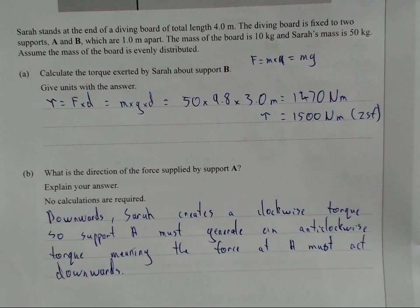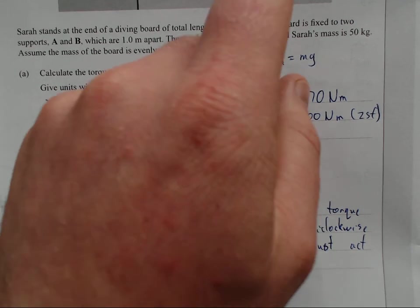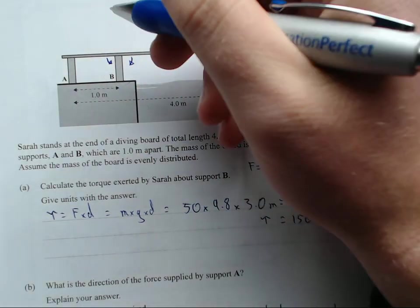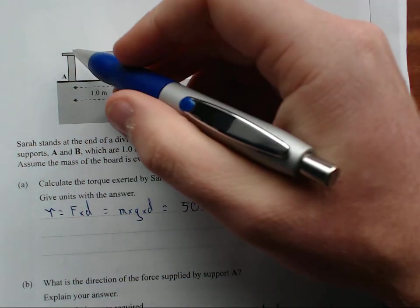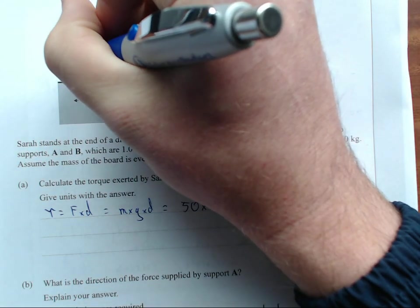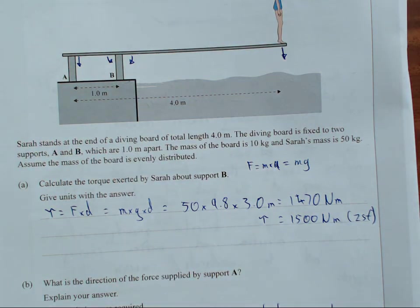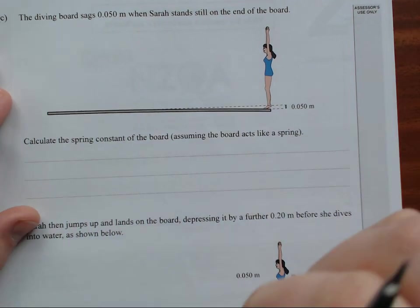Similar as that. So, because she creates an anti-clockwise torque, needs to be an anti-clockwise torque to stop it from moving, because it's not moving, which means A needs to produce a force downwards. Yeah. So, well, it's not ready. Anyway.